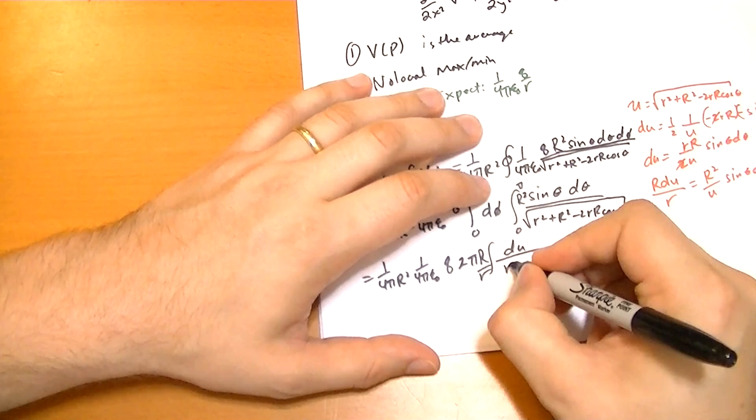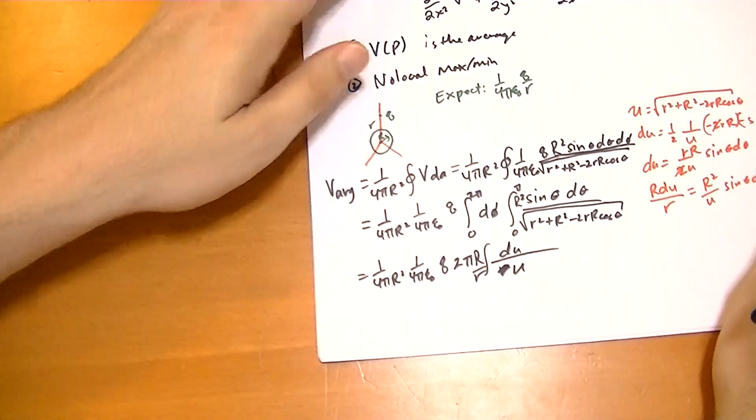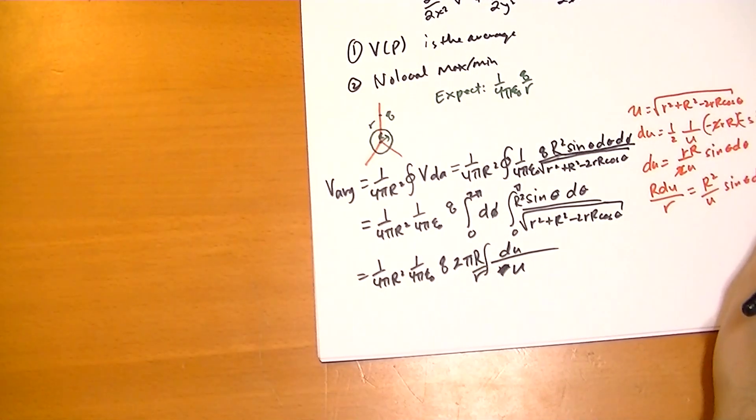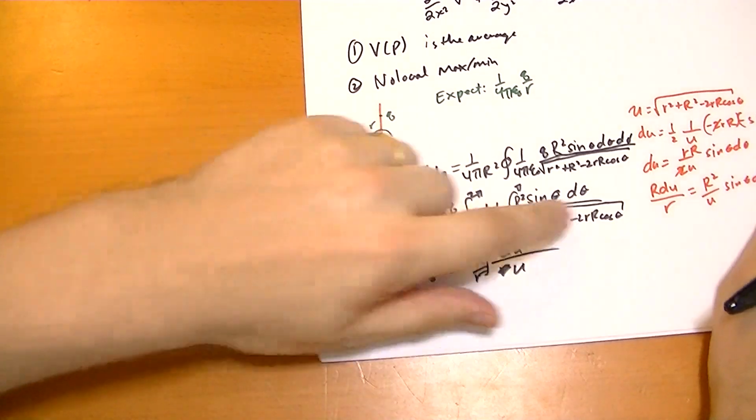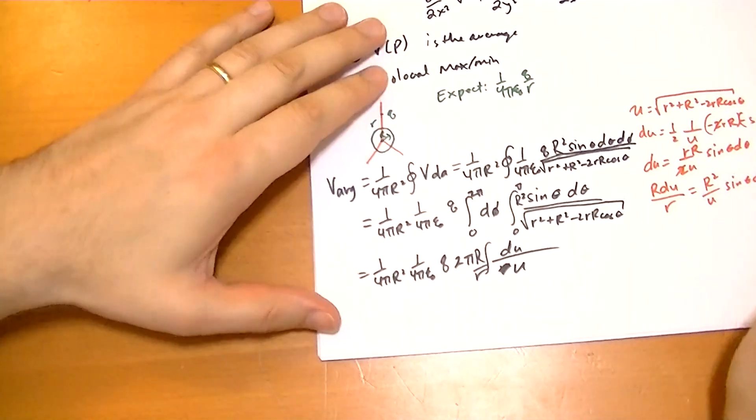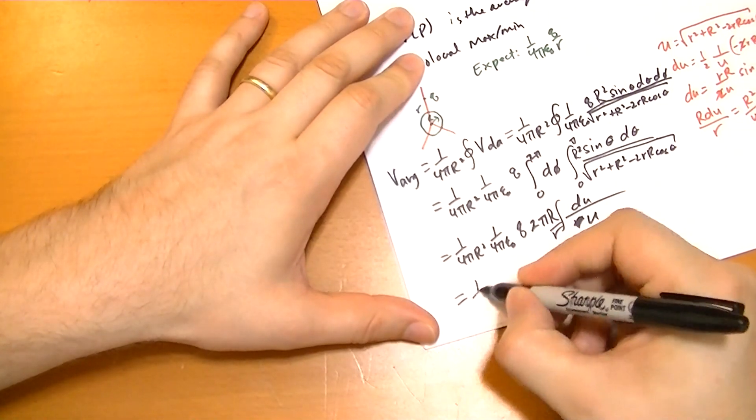r can be pulled out, it's a constant, because we're not varying r. So I pulled out this r and this R, and they're right here right now. And that becomes a really easy integral to solve.